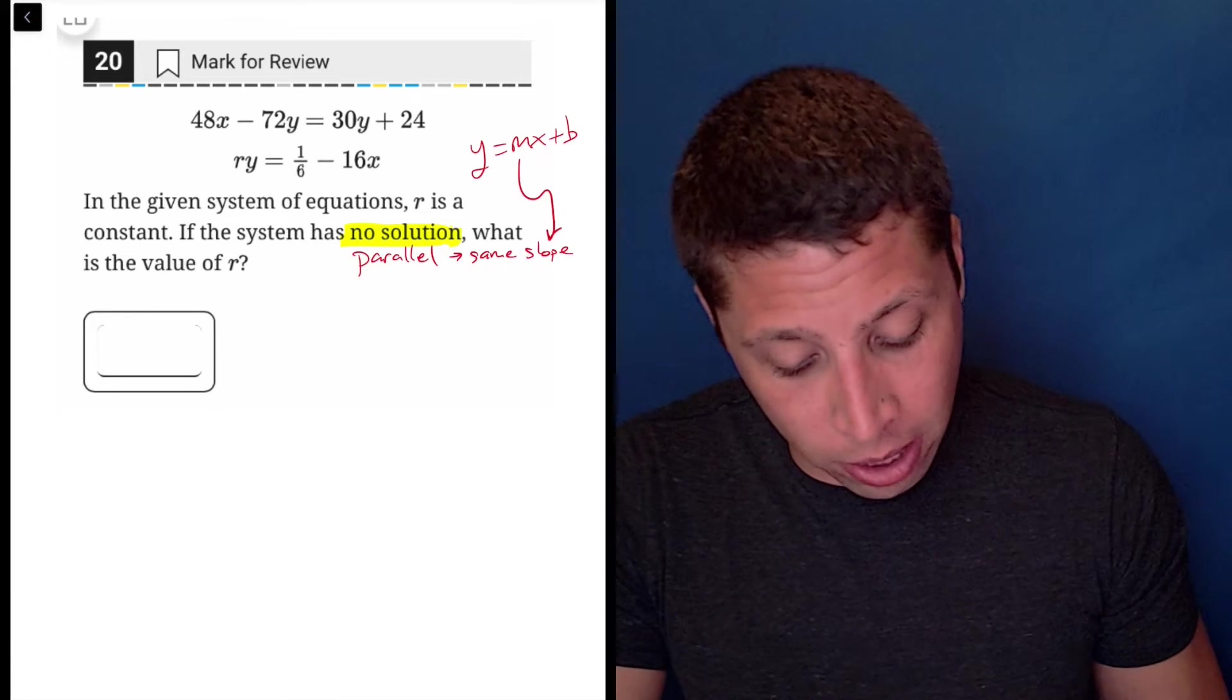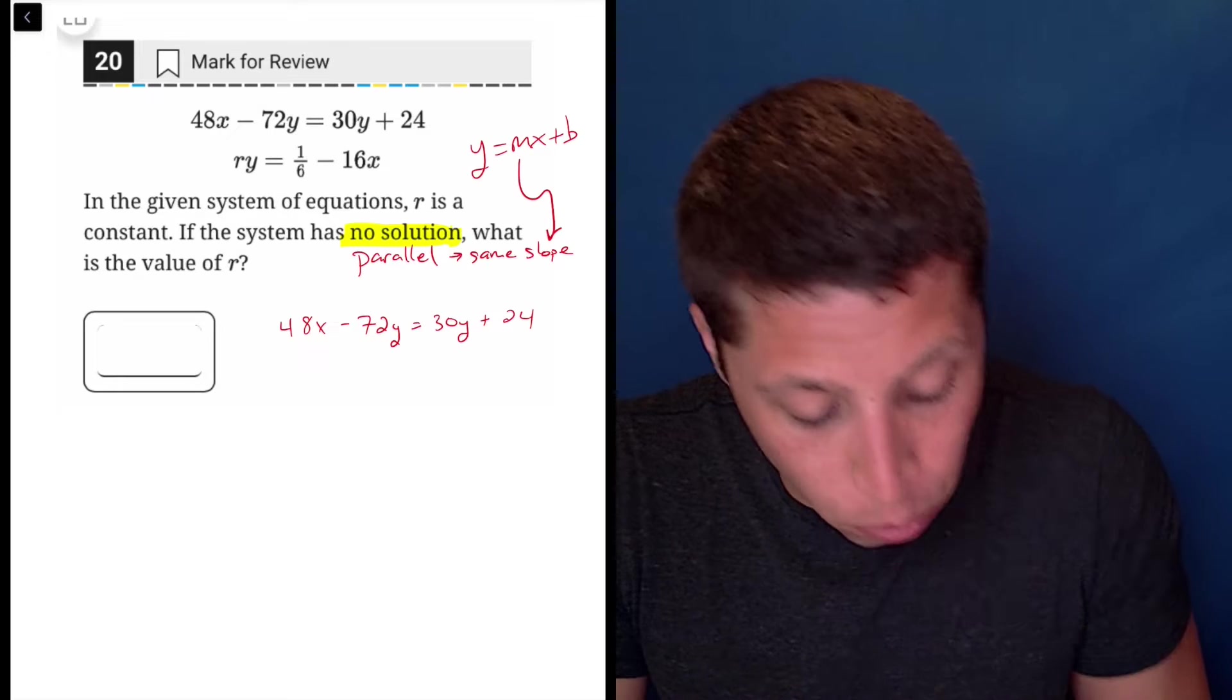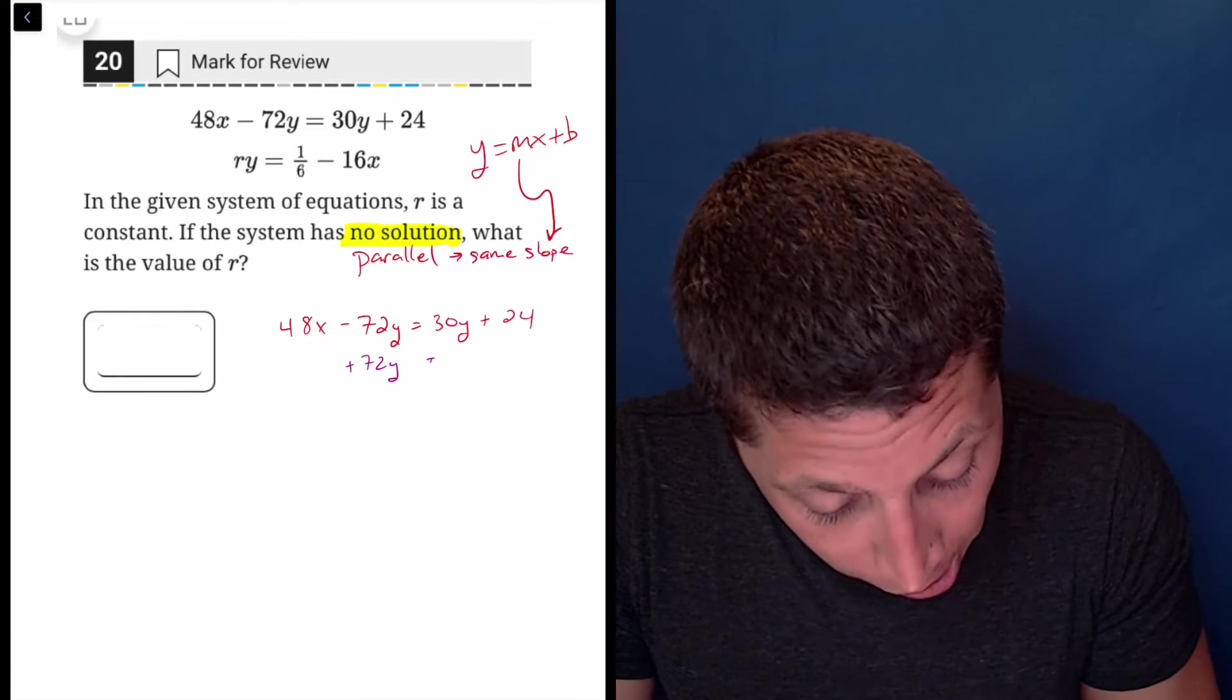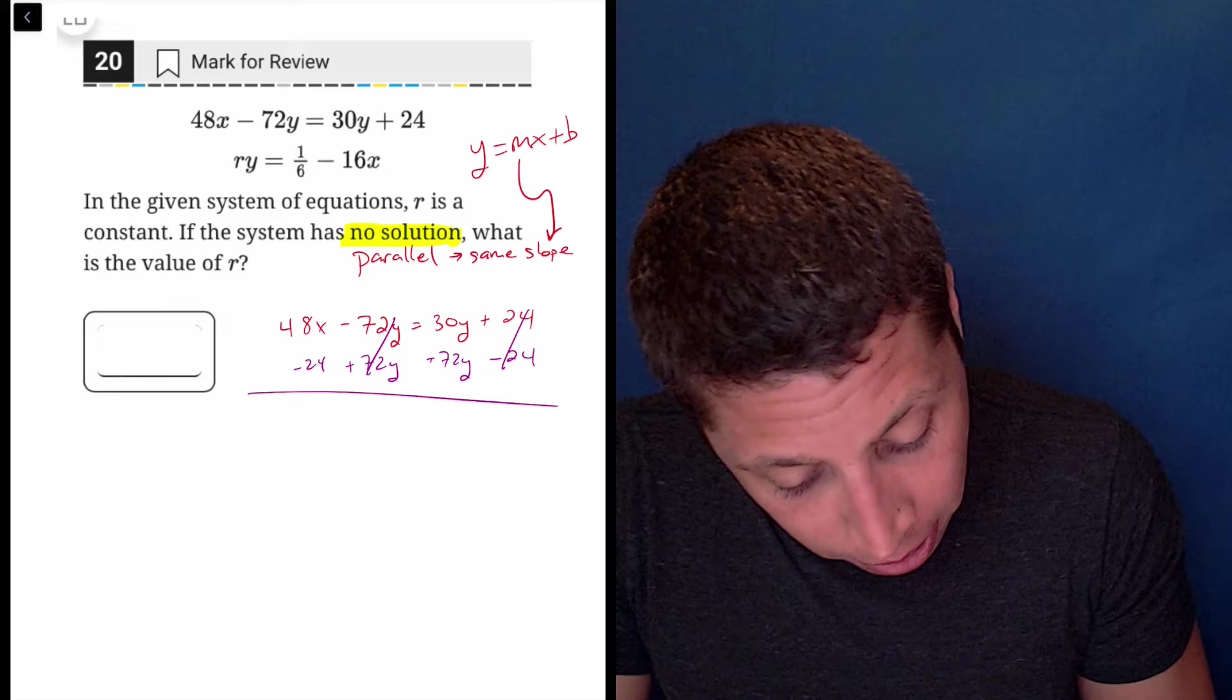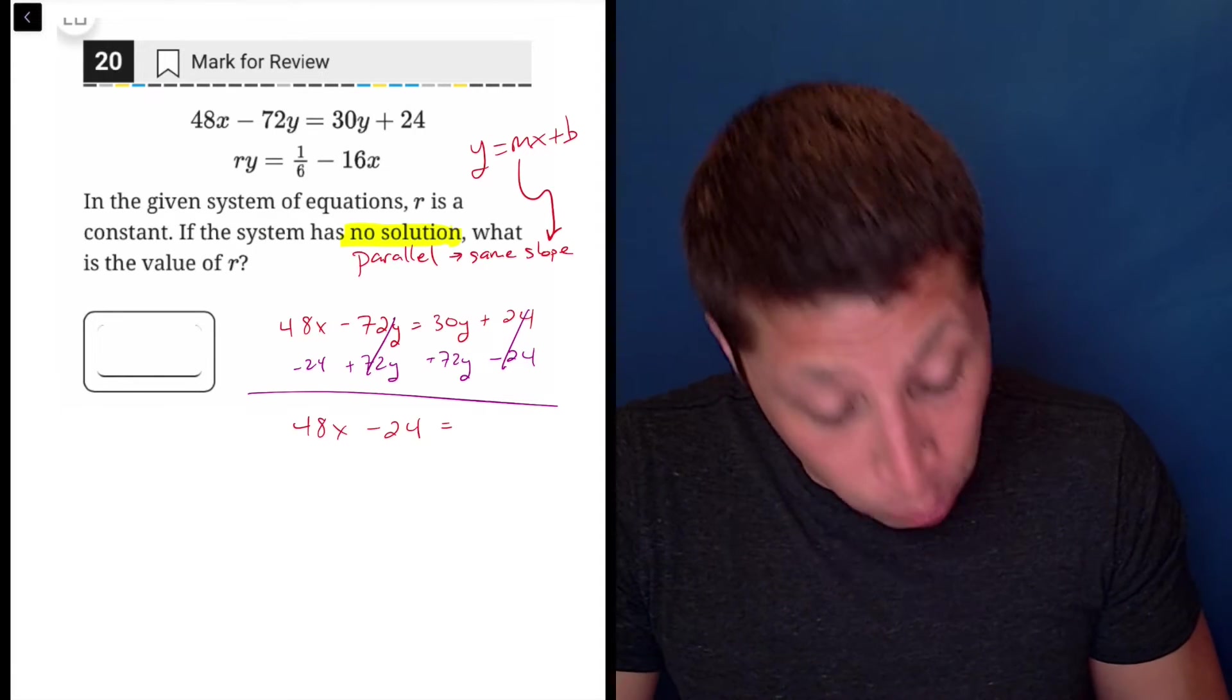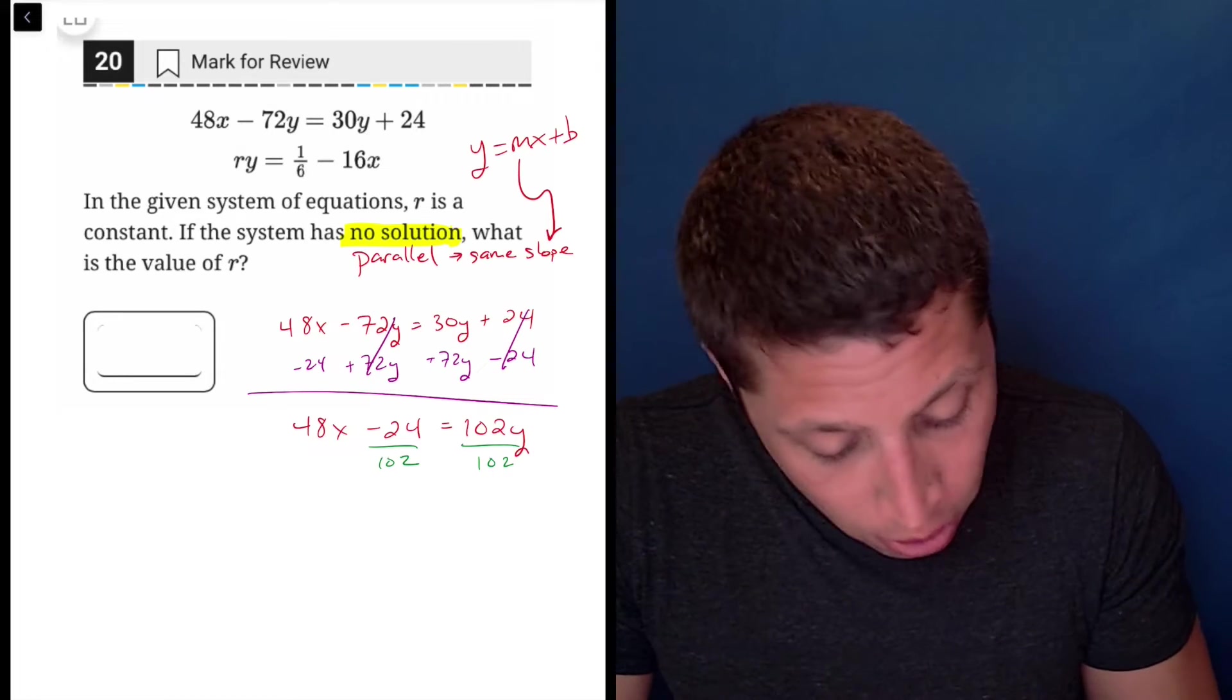So let's start with the equation that doesn't really have many problems. We're going to have 48x minus 72y is equal to 30y plus 24. So we're trying to get this to y equals mx plus b. The y can be on either side. So my gut tells me, let's add the 72y so we can get rid of that negative. Let's subtract the 24. So it's going to go away here, go away here, 48x and 24, those are going to stay separate. So that's going to be 48x minus 24. And now that's equal to 102y. So I'm going to have to divide both sides by 102 to get the y by itself.